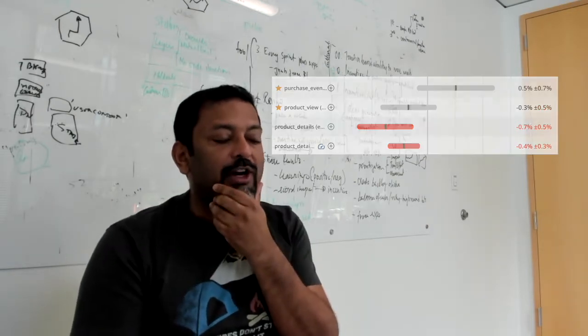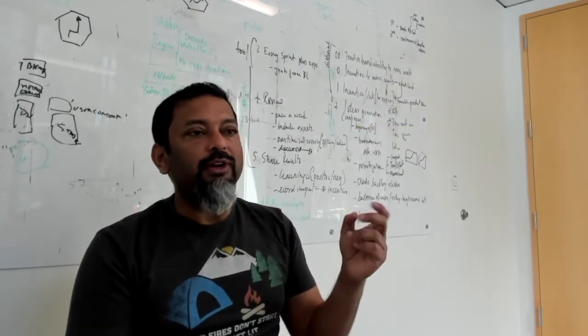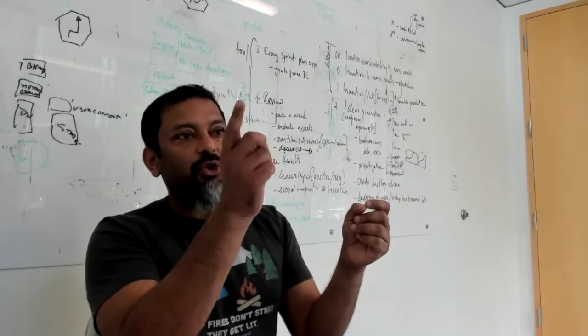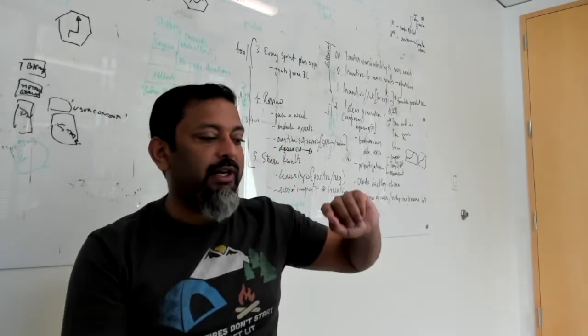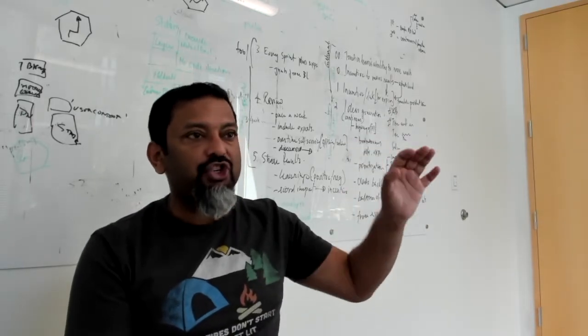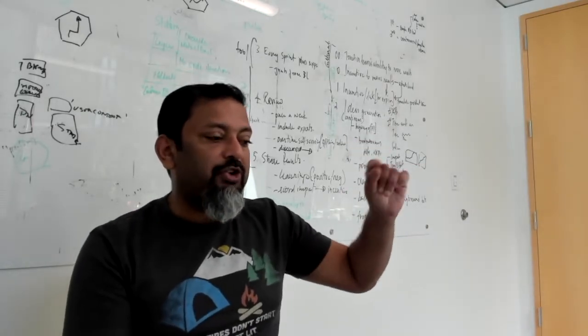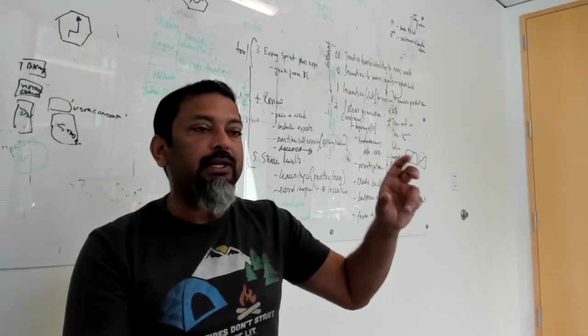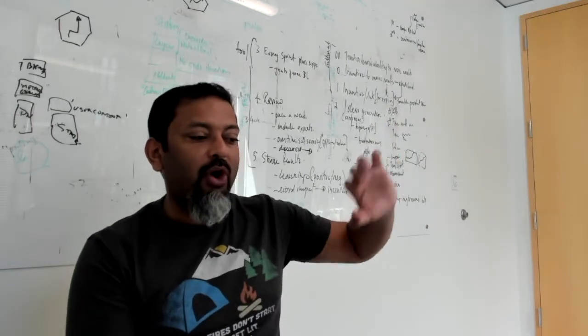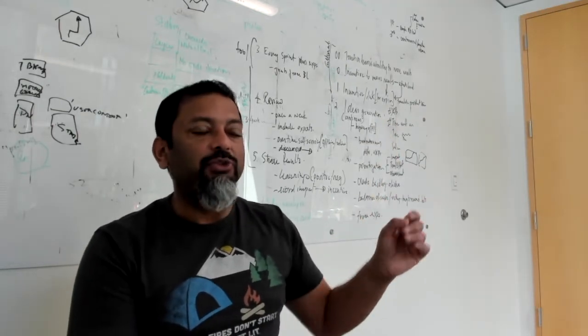They spent some time trying to understand what was going on and they realized that it might be that users that were already conditioned to a horizontal feed within Tavur weren't as quick to realize the new interaction pattern that they had shipped. They ended up having to iterate on their experience a little bit, offer more cues in the app to make sure it was obvious this was the navigation pattern they had to use.